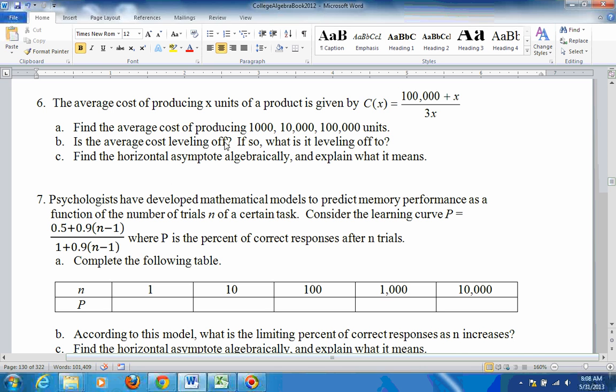So is the average cost leveling off? Yes. If so, what's it leveling off to? 0.3333, one third. Find the horizontal asymptote algebraically. Again, both of these things are to the first power. When they're both to the same power, just divide the leading coefficients. One divided by three is one third.